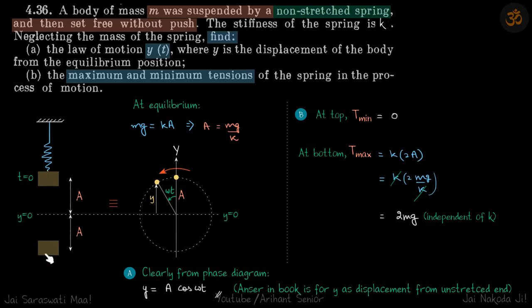Let's say it starts to perform SHM about this mean position. So at equilibrium position we know forces are balanced, so mg will be equal to ka. From here we immediately get amplitude of this SHM is mg by k. Now let's represent this in phase diagram.